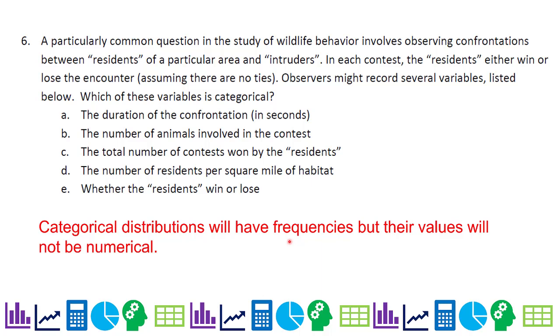Categorical distributions will have frequencies but their values are not numerical. For A, the values in seconds, that is numerical. B, the number of animals, numerical again. Total number of contests won by the residents, that is numerical. The number of residents per square mile, is numerical.